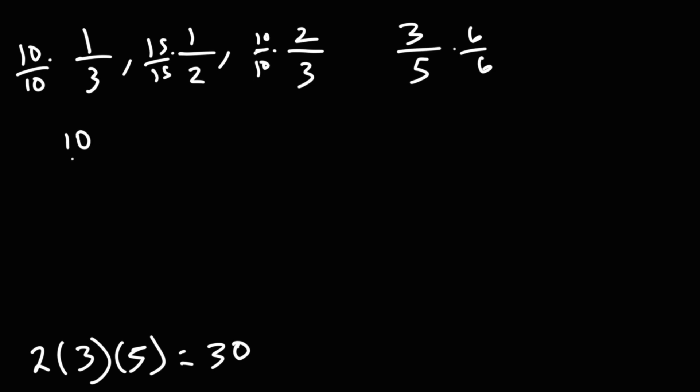So I'm going to get 10 over 30. For the next one, I'm going to get 15 over 30. And then 20 over 30. And 3 times 6 is 18. So 18 over 30.